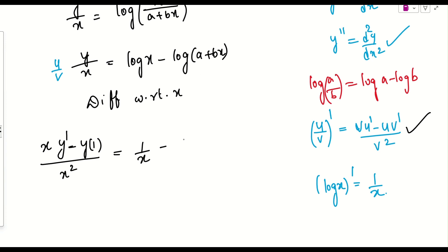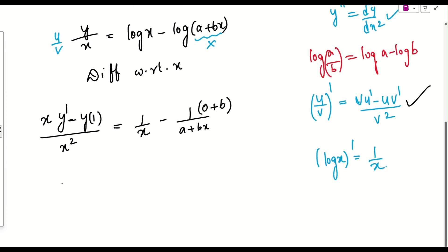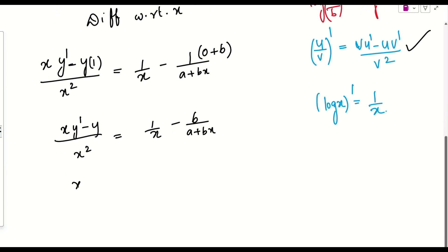The right side differentiates as: derivative of log x is 1/x, minus derivative of log(a+bx). For log(a+bx), applying chain rule gives 1/(a+bx) times the derivative of (a+bx), which is b. So the right side equals 1/x − b/(a+bx).